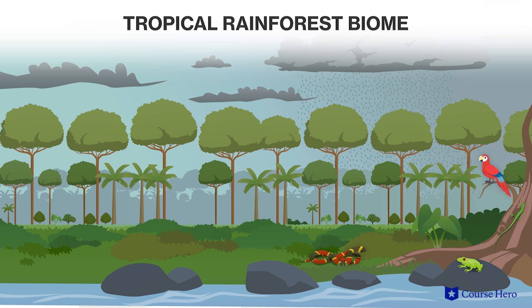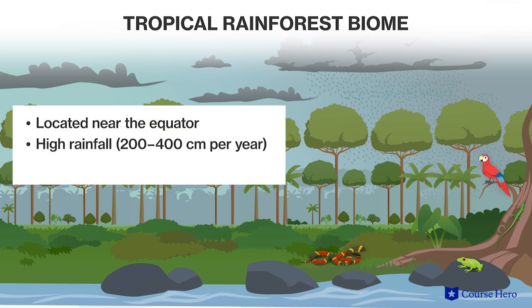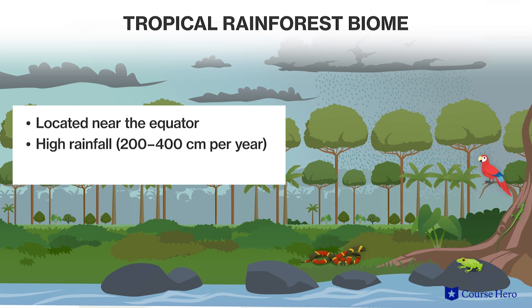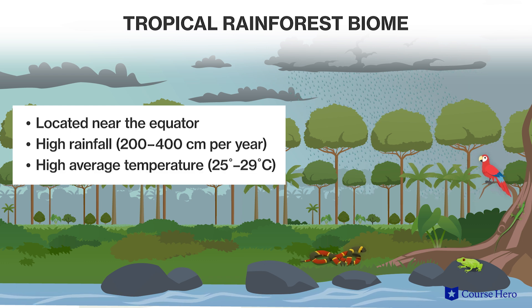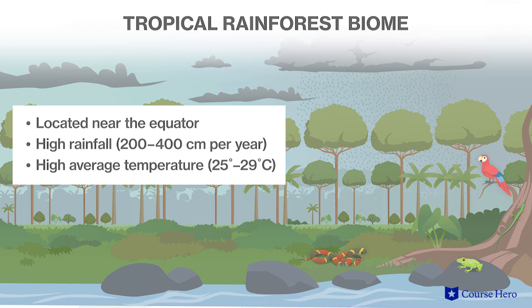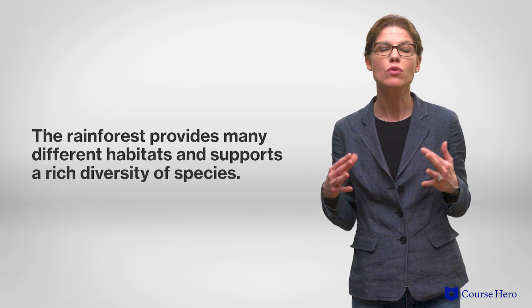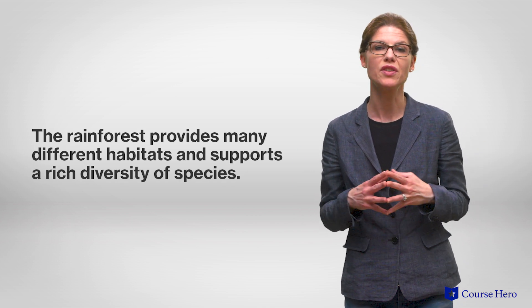Tropical rainforests occur near the equator and experience high rainfall ranging from 200 to 400 centimeters of rain a year and high average temperatures ranging between 25 and 29 degrees Celsius. The layered structure of tropical rainforests provides many different habitats and therefore a rich diversity of species.